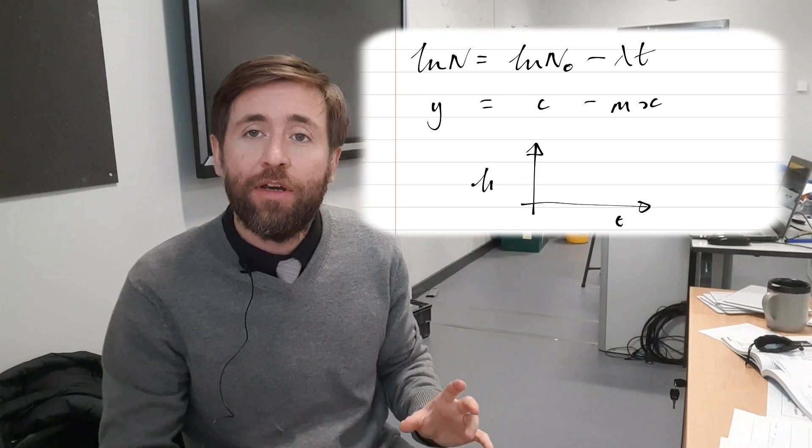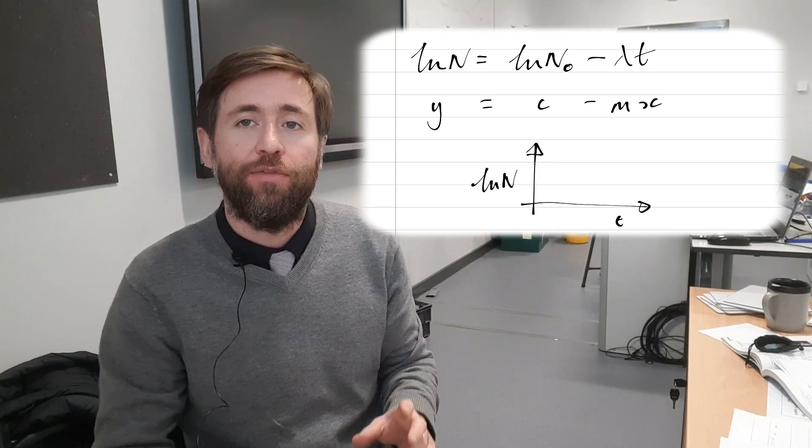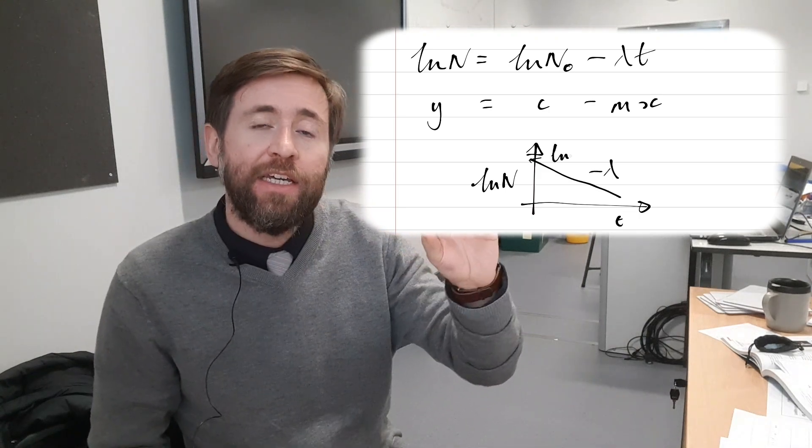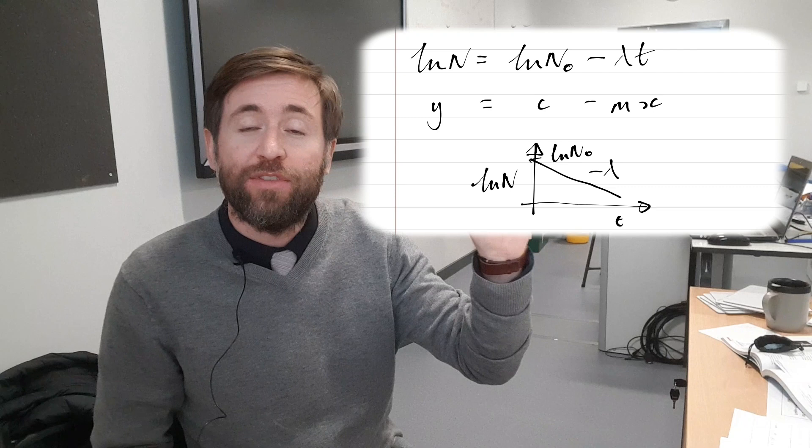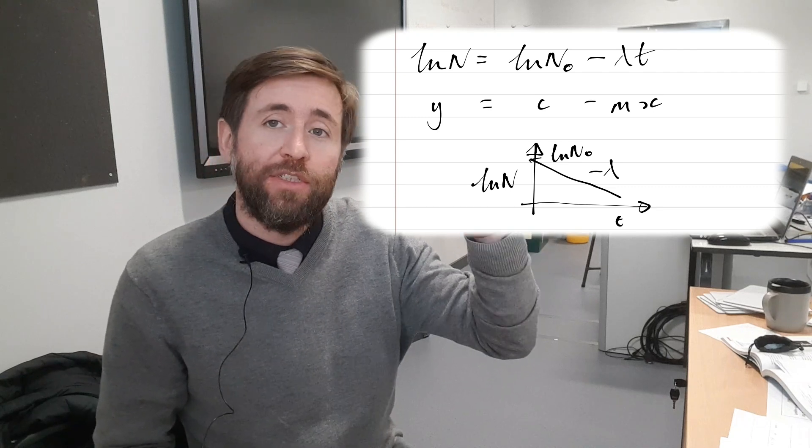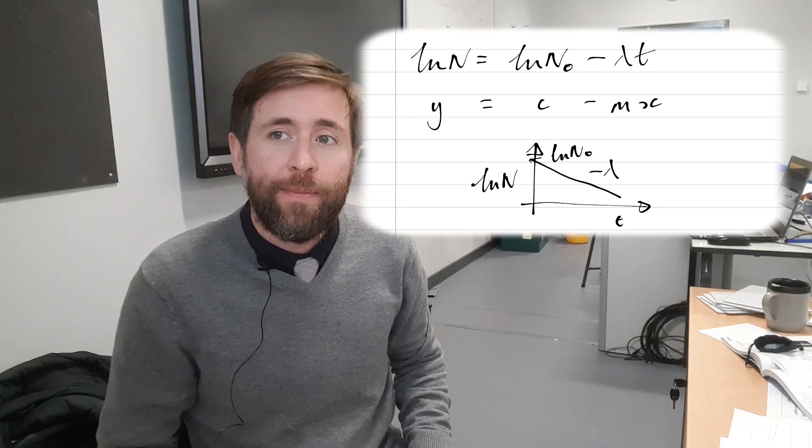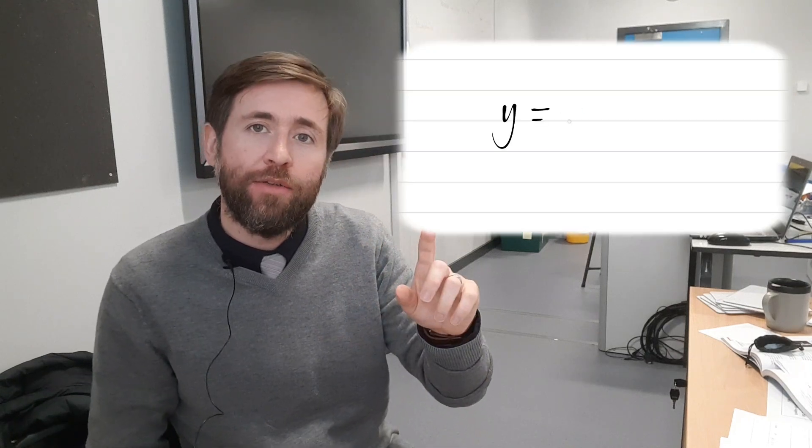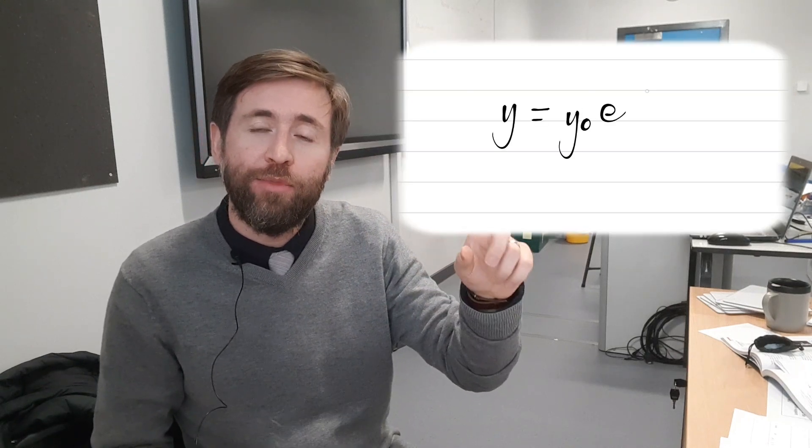That can be generalized because all exponentials follow the form y equals some constant times by e to the power of some constant, a decay constant or a growth constant, x. So y equals y nought e to the power of mu x.